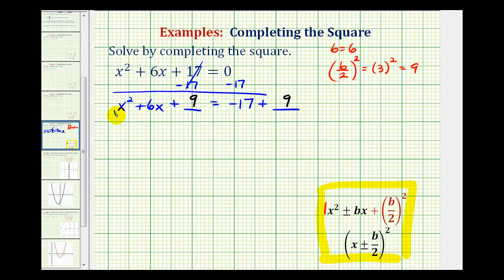So now we're going to factor this trinomial and combine the terms on the right. So let's factor this into two binomial factors first. Notice the right side is going to be negative 17 plus 9, that's negative 8.